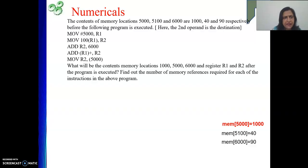So already we are quite familiar with counting number of references. So we will do that quickly. So move #5000, R1. This is immediate addressing mode. While solving these, we will be following the rules that we have learned in discussing our addressing modes.